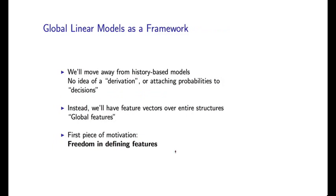So one key idea is the following. We'll move away from this idea of derivations, or in particular, we'll move away from this idea of attaching probabilities to individual decisions which go into building an entire structure. Instead, we're going to talk about feature vectors over entire structures. We'll call these global features, and this is really where the name global linear models comes from.